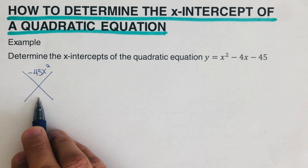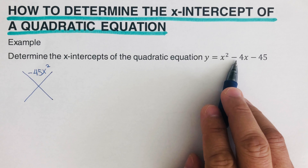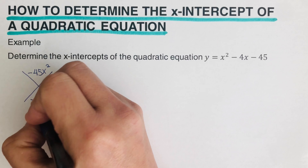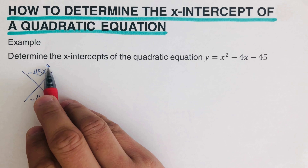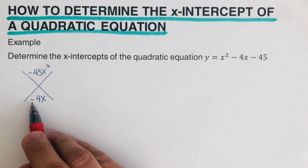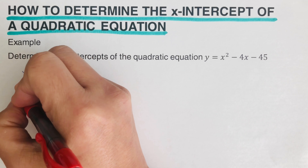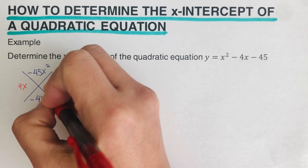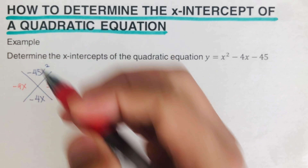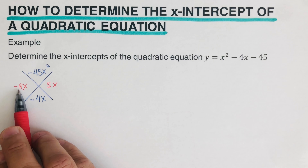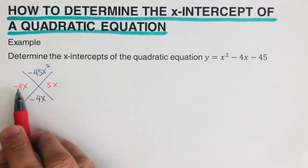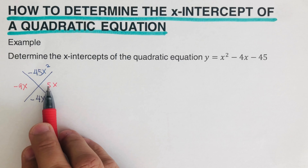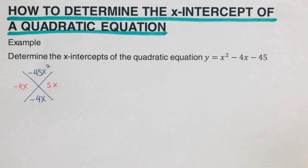The value we write at the bottom of the diamond is the middle term, which is negative 4x. We then determine the factors of negative 45x squared such that they add up to negative 4x. Those values are negative 9x and 5x, because negative 9x times 5x equals negative 45x squared, and negative 9x plus 5x equals negative 4x.